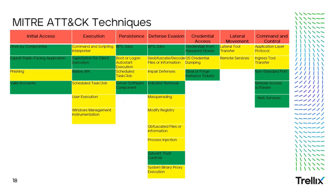The techniques we'll focus on include: phishing, command and scripting interpreter, scheduled task/job, user execution, and WMI for initial access/execution. For persistence: boot or logon auto start execution, and scheduled task/job. For defense evasion: deobfuscate/decode files or information, impaired defenses, masquerading, modify registry, obfuscated files or information, process injection, and system binary proxy execution. For credential access: OS credential dumping. For lateral movement: lateral tool transfer and remote services. For command and control: application layer protocol and ingress tool transfer.